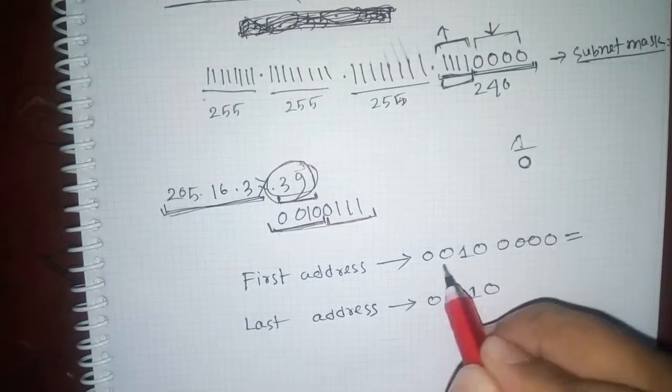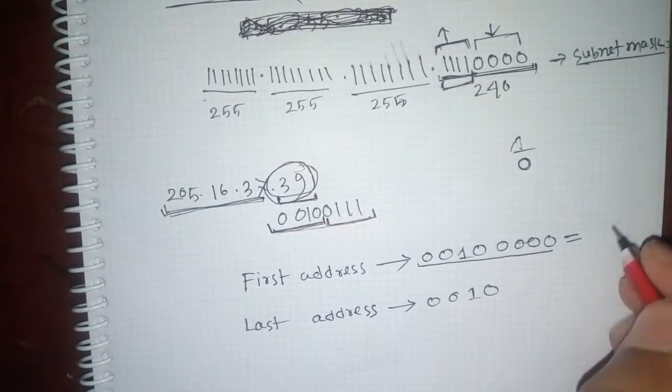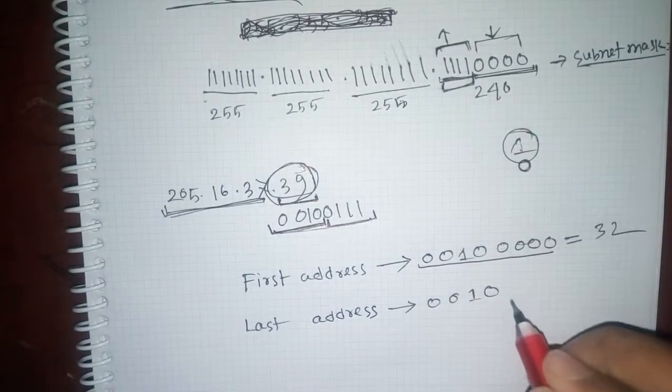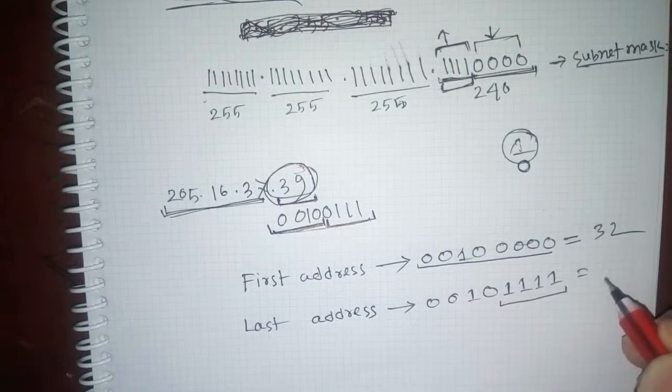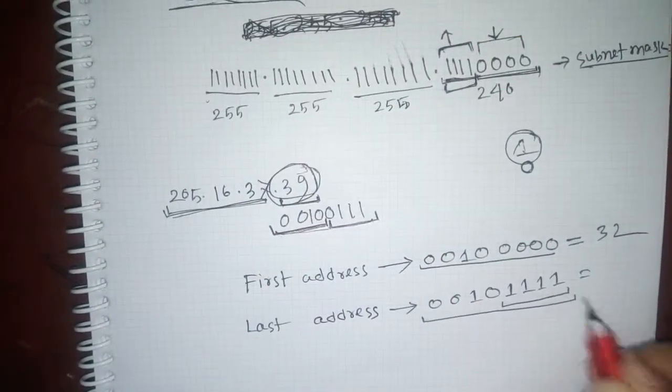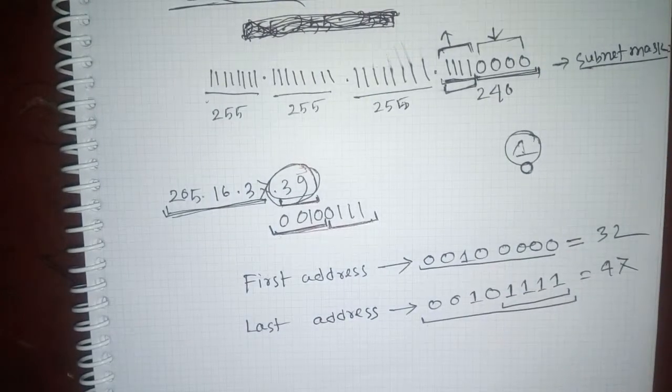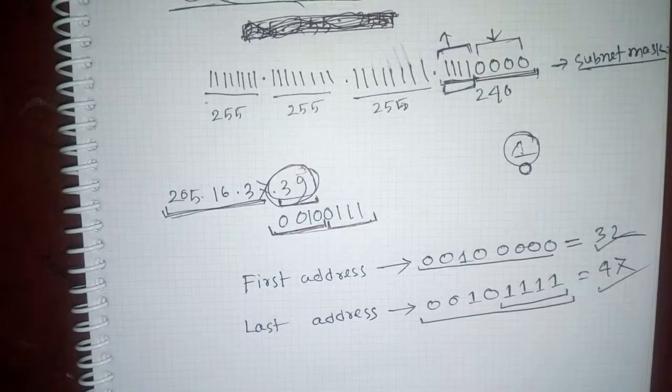I will give you 32 as the first address. The last address is the last address. First address, last address. What is the total address? So we will give you the first address 32, last address is 47.